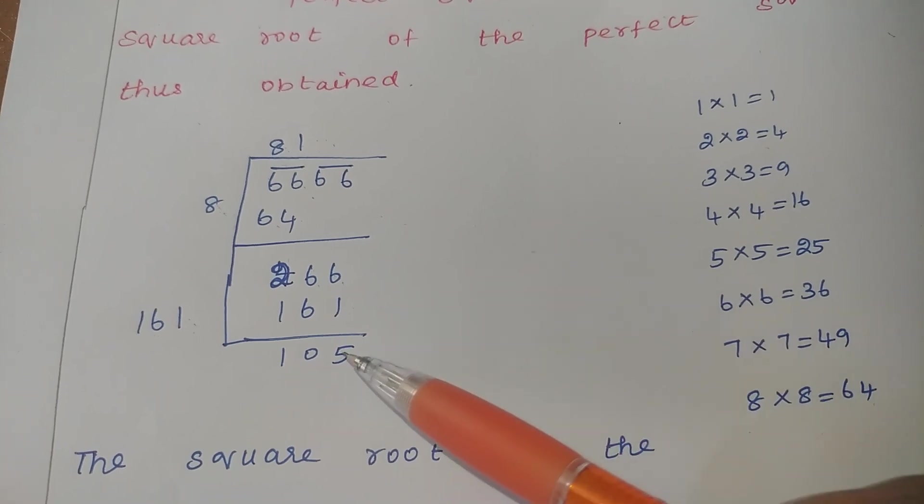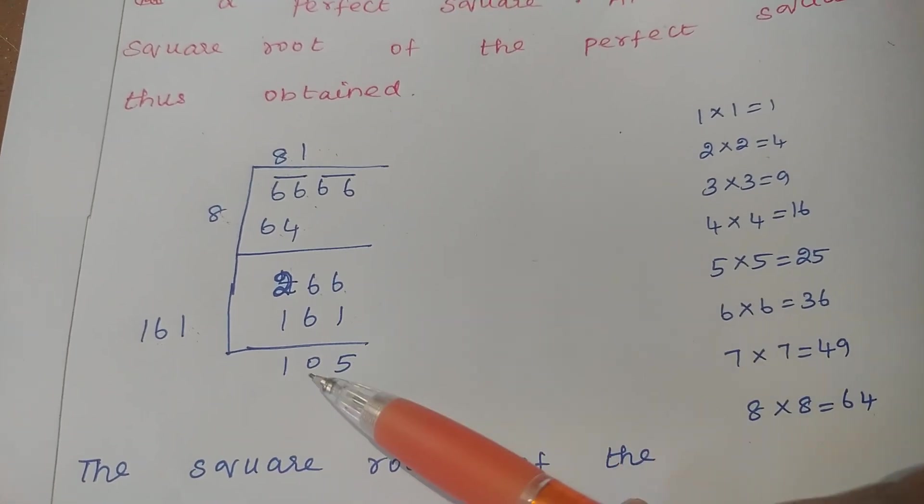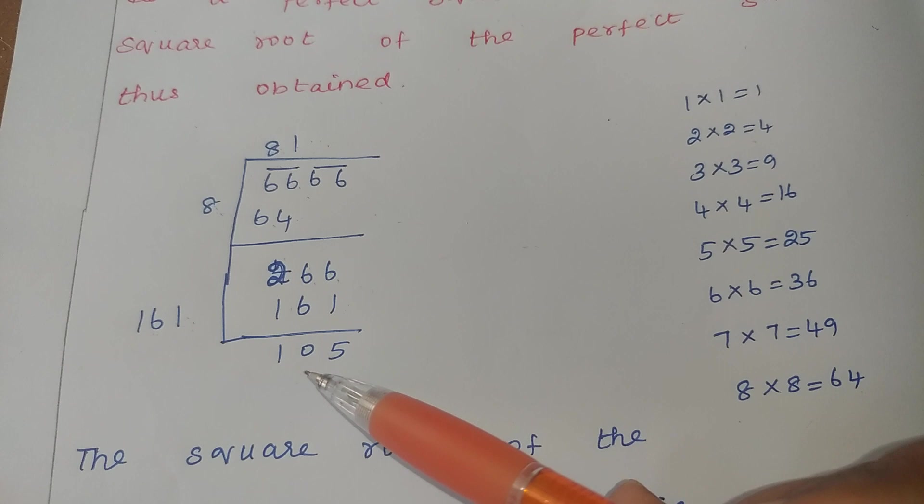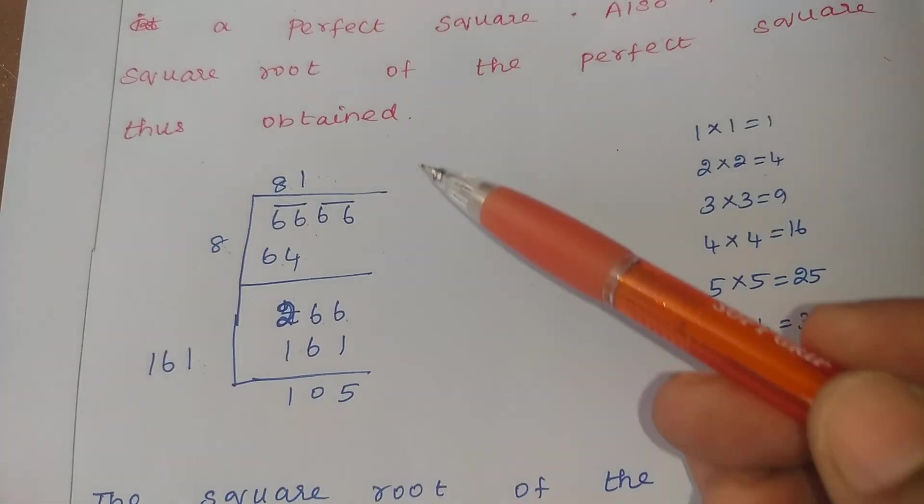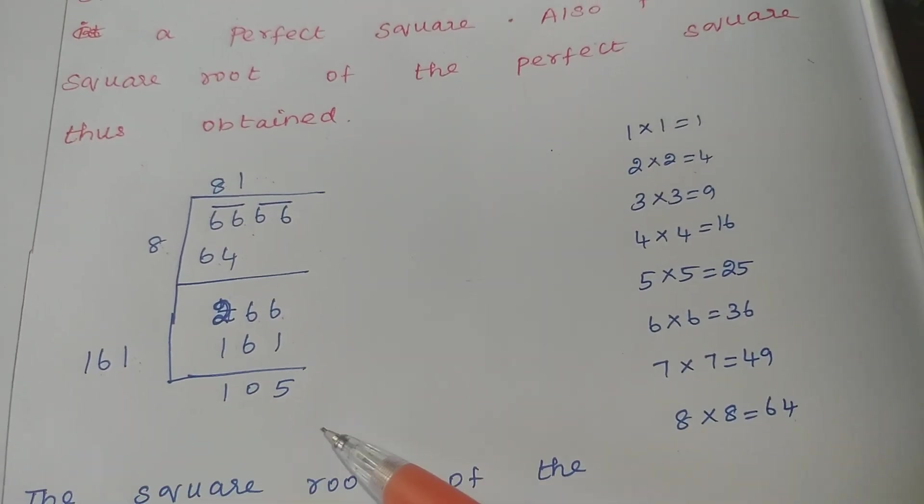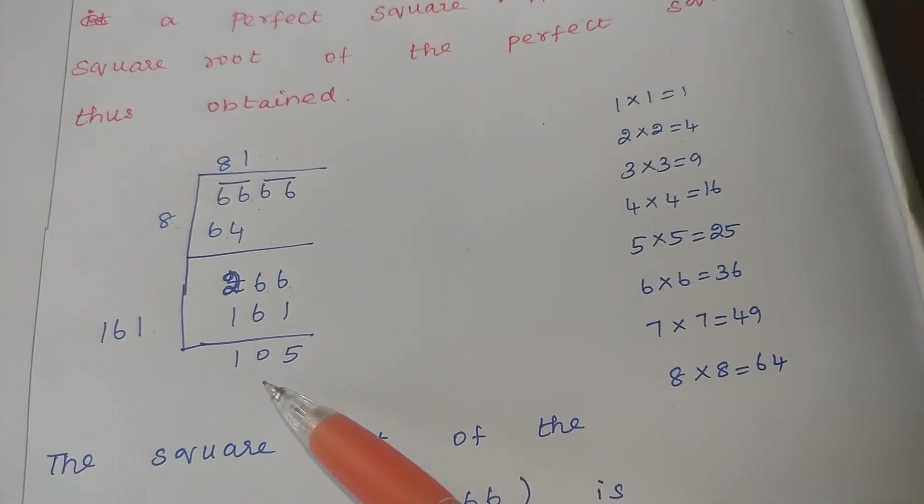161 into 1. So 161. Now we will subtract. 6 minus 1, 5. 6 minus 6, 0. 2 minus 1, 1. 1, 0, 5. Any other values is here? No.